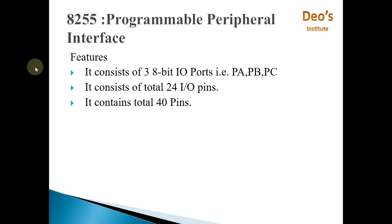It contains three 8-bit IO ports named as Port A, Port B, and Port C. It consists of a total of 24 IO pins — three ports with 8 bits each gives 24 IO pins. The 8255 IC contains a total of 40 pins.